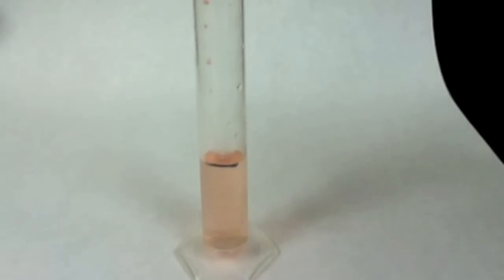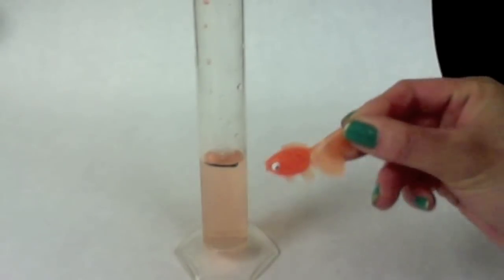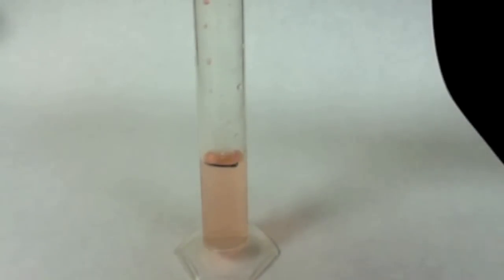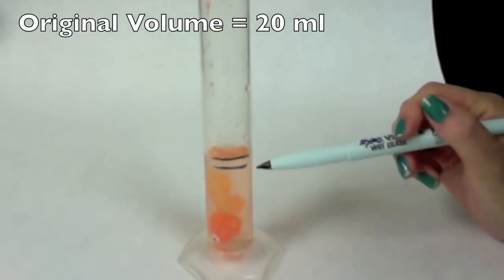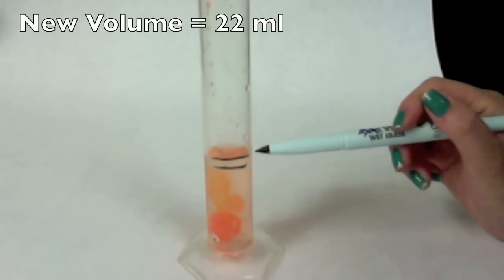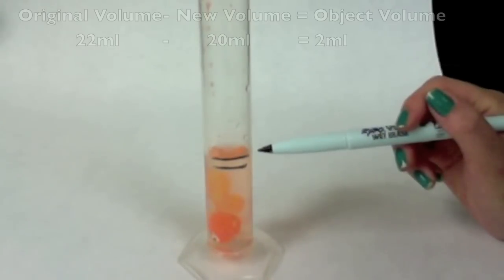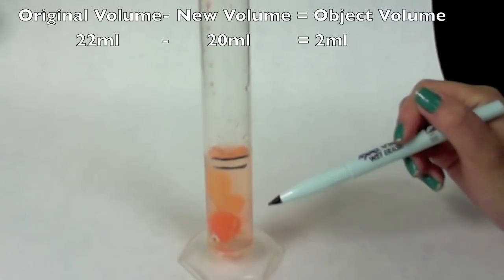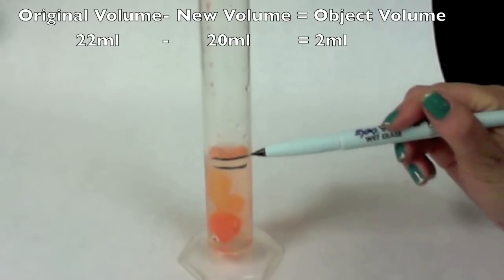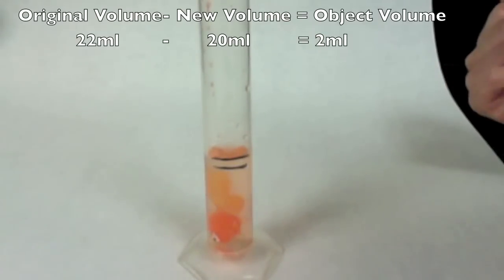When you do volume through displacement, you put the oddly shaped object into the graduated cylinder, noting the original level of the water, which is 20 milliliters. You can see that when you put the object inside, it pushes some of the water up or displaces the water. Here is the new water level. Originally, the water level was 20 milliliters. Now, the water is 22 milliliters. 22 milliliters minus 20 milliliters is the volume of the object inside the water. So, this 2 milliliters is the volume of the goldfish.